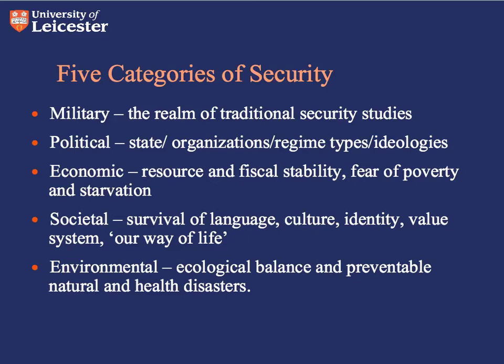Societal security may involve things such as a threat of a shared language dying out, or a challenge to cultural traditions or systems of values. It's perhaps what George W. Bush was referring to during the early days of the War on Terror when he would refer to 'our way of life.' Environmental security may involve natural disasters, health issues such as the spread of disease, or ecological issues such as climate change — and thinking about climate change as a security threat is now quite popular. For Buzan, the security agenda revolves around all five of these categories, not just the military sector.